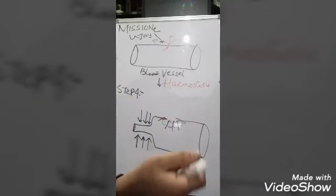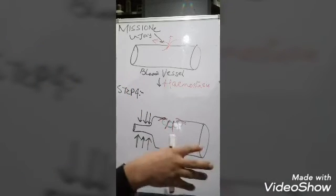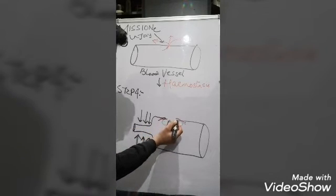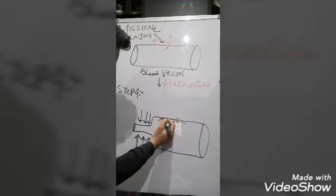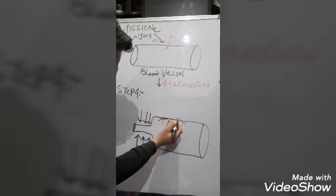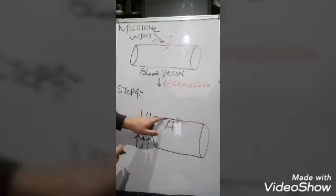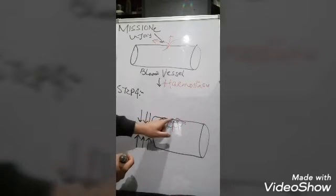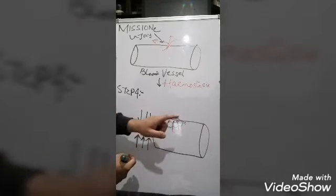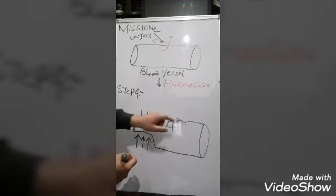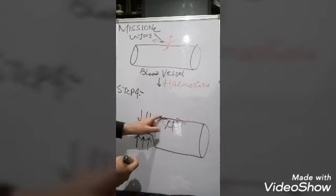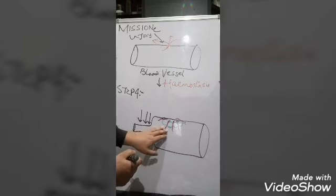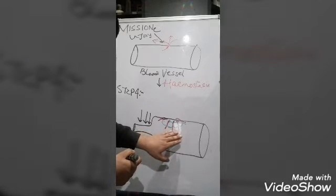What is step four in hemostasis? Once bleeding is stopped, meanwhile the injury site is healed and the blood vessel is repaired. The blood vessel regains its continuity.